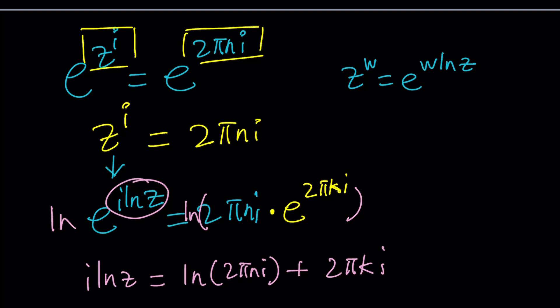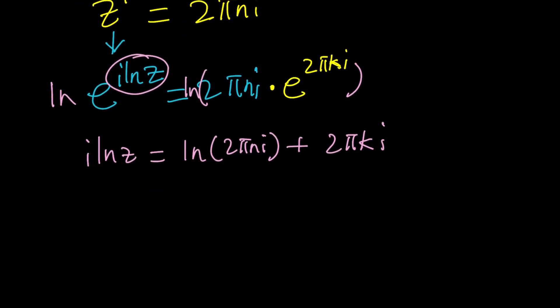Now we have to split it up because depending on the value of n, we get different numbers. For example, 2 pi i and negative 2 pi i obviously are different complex numbers. Their arguments are different. Their lengths are the same. The moduli are the same. But arguments are different, which makes them different numbers. So what do we do?